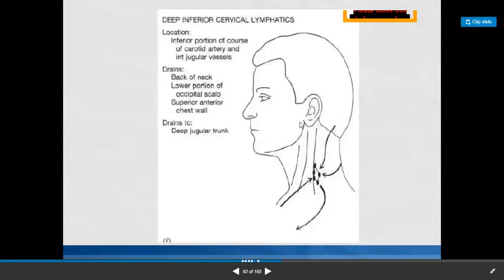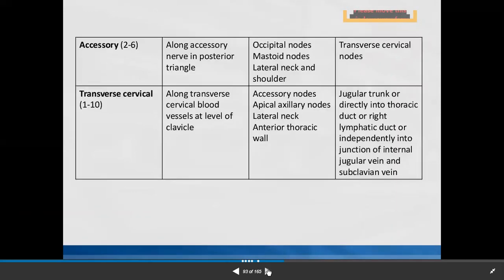The deep inferior cervical lymphatics are situated in the inferior portion along the carotid artery and internal jugular vessels. Efferents come from the back of the neck, lower occipital scalp, and superior anterior chest wall, draining to the deep jugular trunk. The accessory group — 2 to 6 in number — is situated along the 11th cranial nerve, the accessory nerve, in the posterior triangle. They collect from occipital nodes, mastoid nodes, lateral neck, and shoulder, then move lymph to transverse cervical lymph nodes.